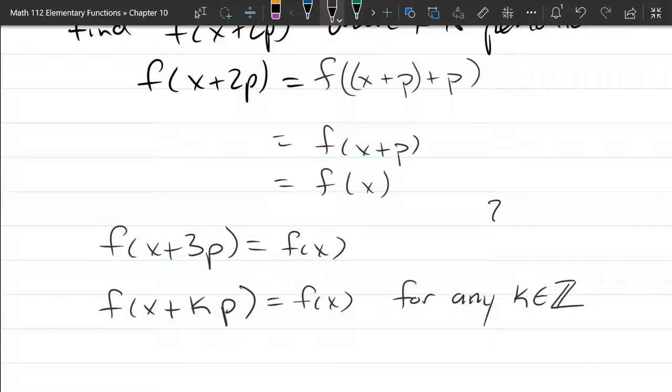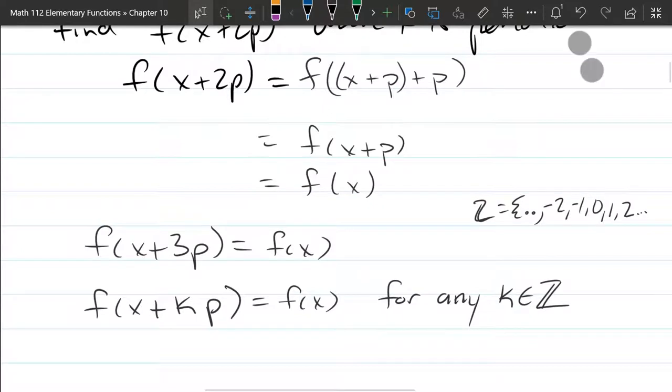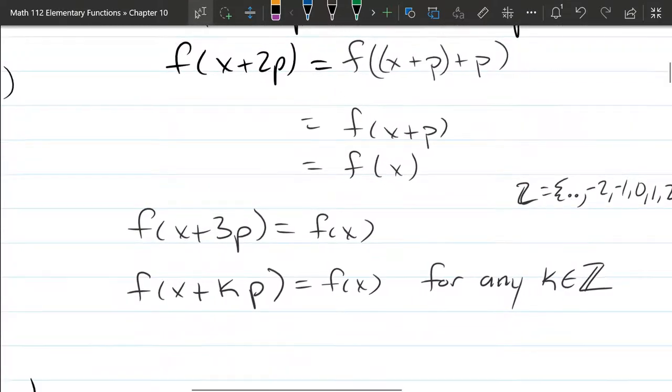And of course, recall the Z are the integers, which we can write as negative 2, negative 1, 0, 1, 2, dot dot dot. Alright, so that'll also work for negative K values.